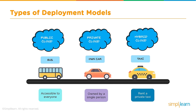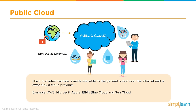Meaning, if I already have a data center, I can integrate it with the cloud and use both, and that would become a hybrid environment. So let's summarize the types of cloud based on deployment models. Public cloud is a cloud infrastructure that's made available to the general public over the internet, and it is owned by the cloud provider. Some of the major cloud providers are AWS, Microsoft Azure, IBM's Blue Cloud, and SoundCloud.